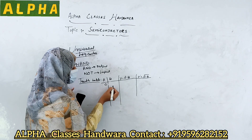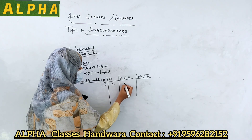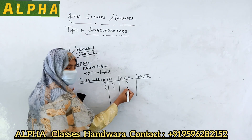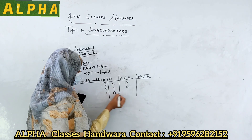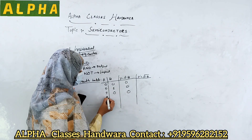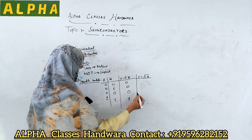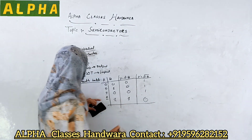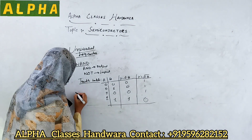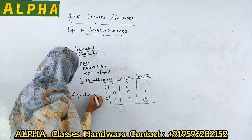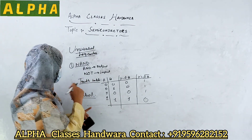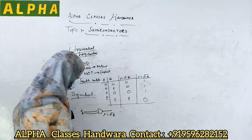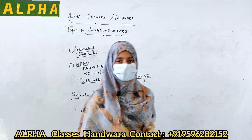Let us see the truth table for the NAND gate. If both inputs are 0, output is 0, that is low. If one input is 0 and another input is 1, output will be 0. If both the inputs are high, that is 1, output will be high, that is 1. This is the truth table for the NAND gate. Its symbol is formed by combining the symbol of the AND gate and the NOT gate. This is the symbol of the NAND gate. This was the first universal logic gate.